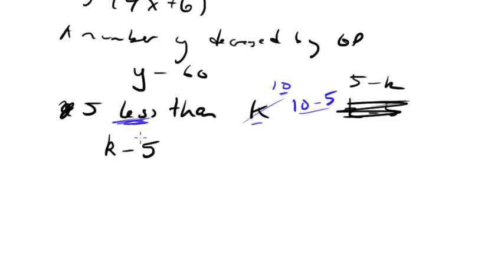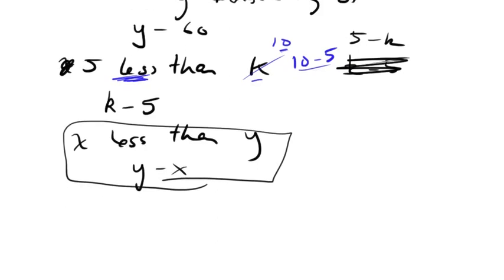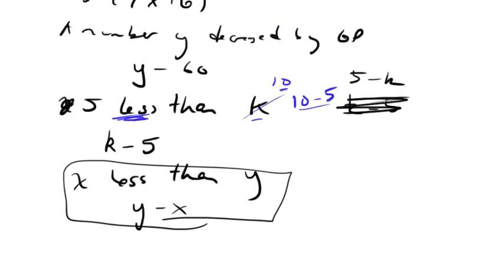So this one doesn't come up too often, but it is one of those tricky ones that I mentioned earlier in the video. Same thing as this: x less than y, what would that be? Well, it's x less than y, so it'll just be y minus x, because you're taking off that x off of the y, it's x less than that y. So these are probably the trickiest ones in the translation, I would say. If you ever see anything like that, anything to do with subtraction, be very careful.